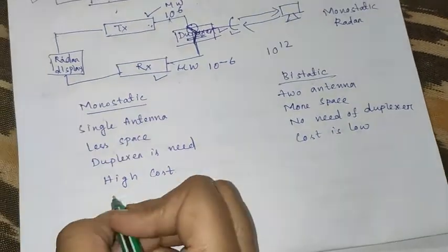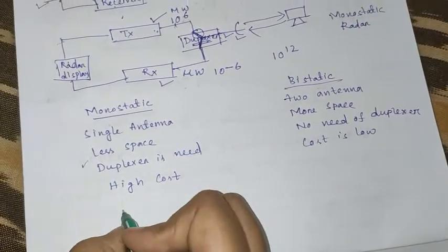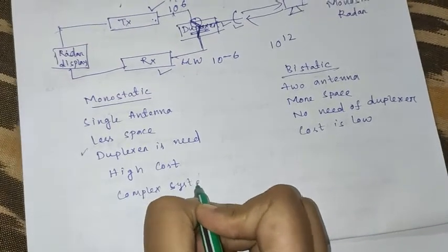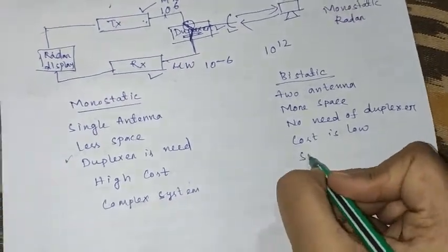Due to the duplexer, the circuit is complex in monostatic, making it a complex system. In bistatic, it's a simple system.